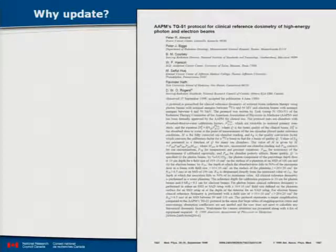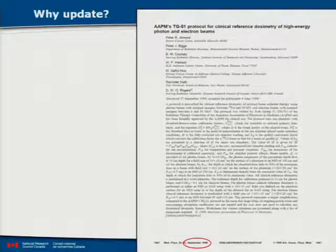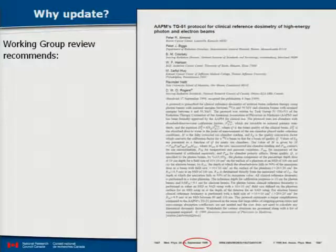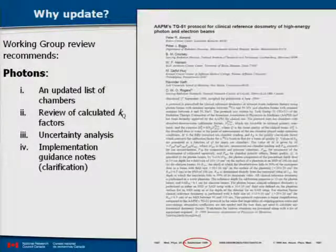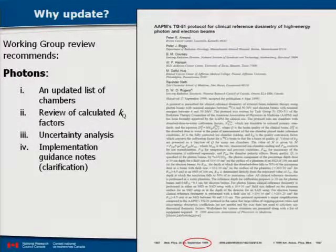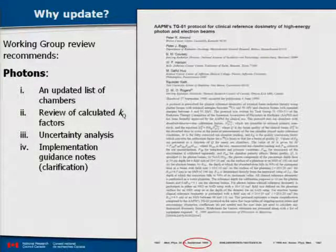Why update if it's so good or if it's been used everywhere? The real thing is the date — it's September 1999. So 12 years have gone by. It seems a reasonable time to ask whether it needs to be replaced. The working group has been formed, and it recommends the following. For photons, there are some updates required: new chambers have come on the market, we need a review of calculated KQs, an uncertainty analysis, and some AAPM official guidance clarification.